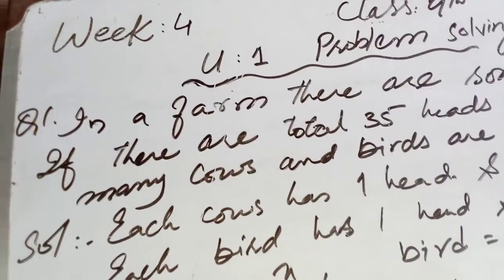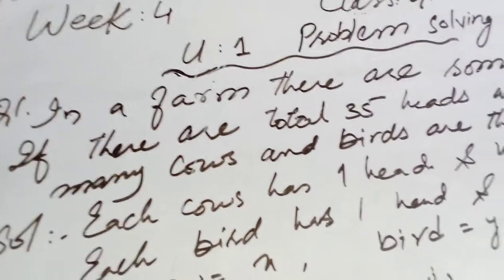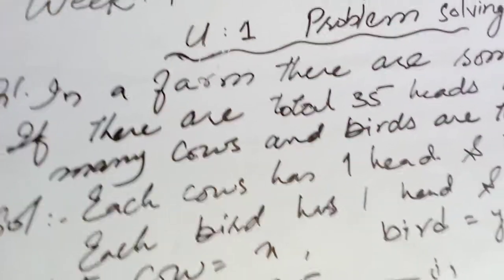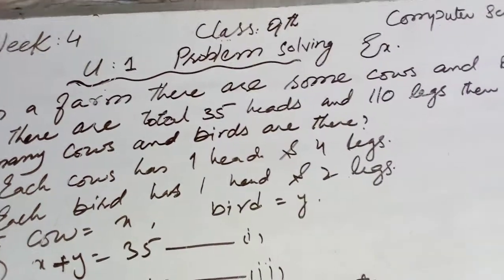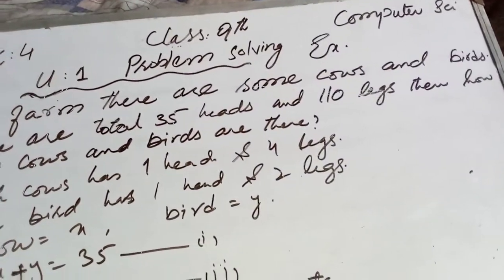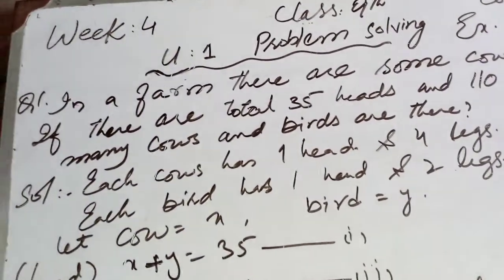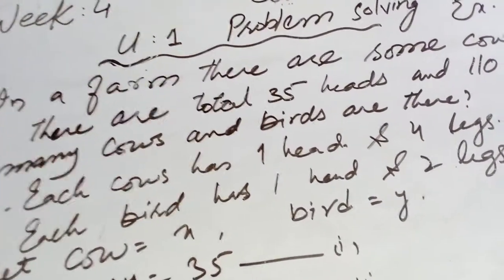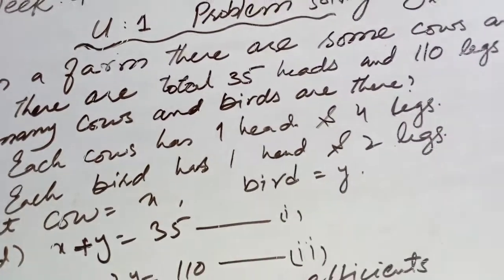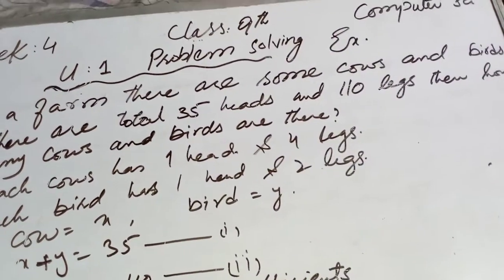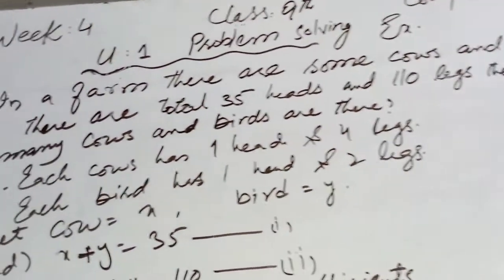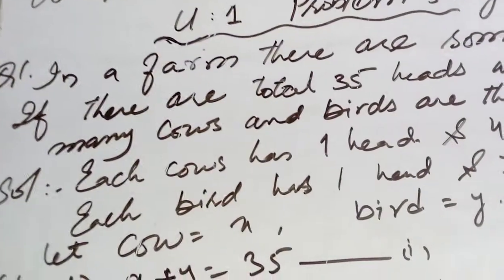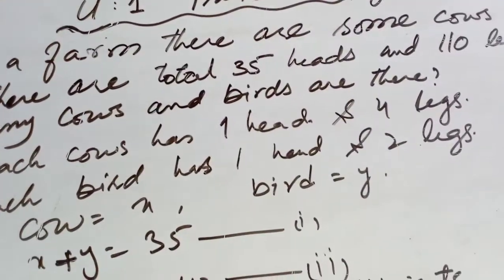Question number one. In a farm, there are some cows and birds. If there are a total of 35 heads and 110 legs, then how many cows and birds are there?